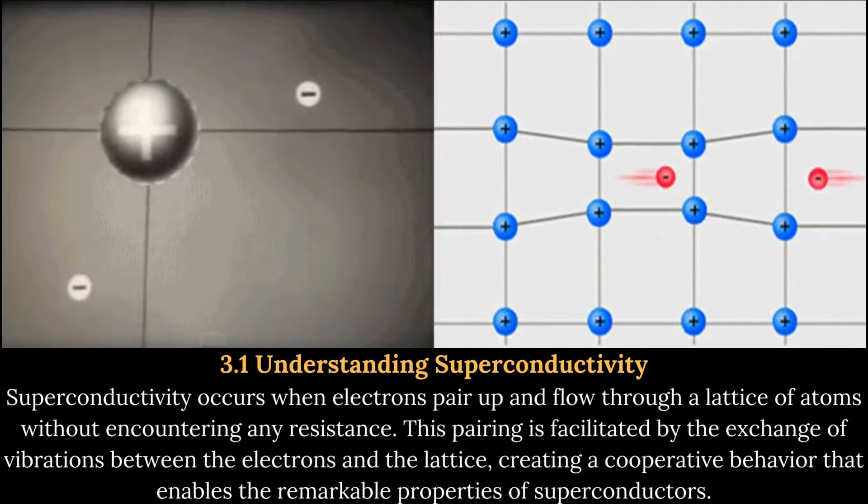Energy Efficient Transportation Systems: Quantum levitation has the potential to revolutionize transportation systems by reducing energy consumption and improving overall efficiency. With the implementation of maglev technology, vehicles could glide effortlessly above the surface, minimizing friction and reducing energy losses. This could lead to a greener and more sustainable future for transportation.